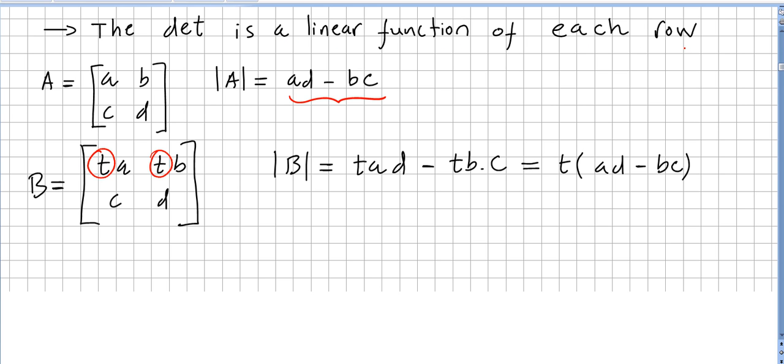So the determinant is a linear function of each row. If you multiply this line now by s, the determinant here will be ta, sd minus tb, sc. So we could factor ad - bc as st(ad - bc). So the determinant is a linear function of each row.